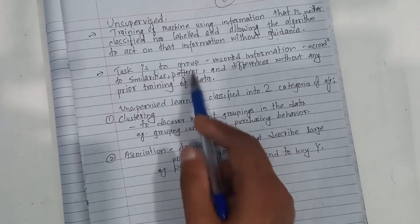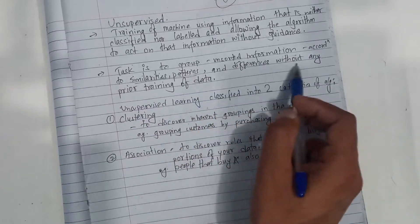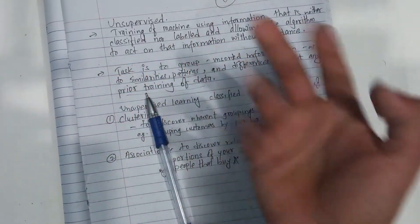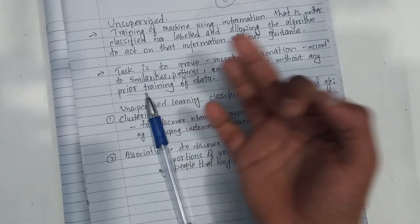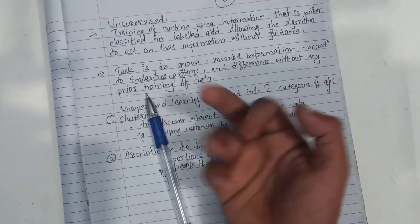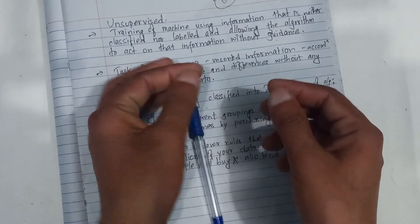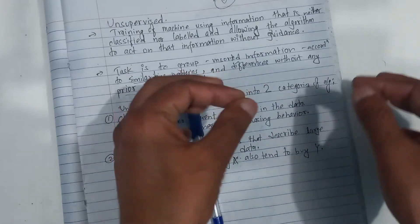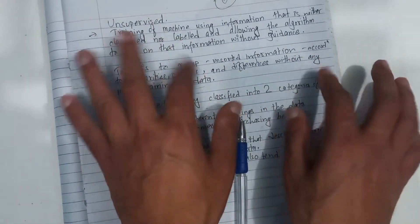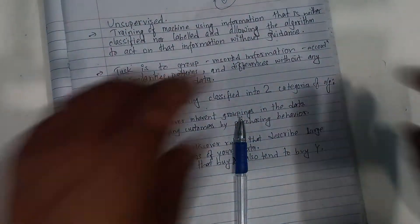The task is to group unsorted information according to similarity patterns and differences without any prior training data. Based on similarity patterns, if you have to work with the data, the data can be divided into two clusters or two groups.